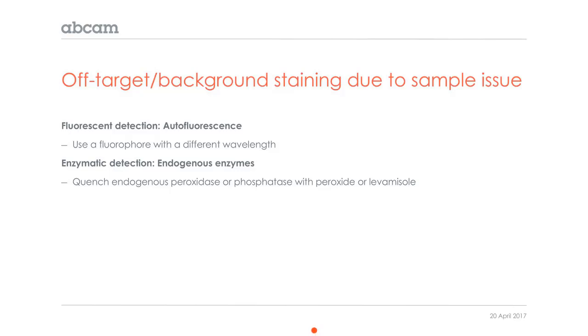Or just look at the tissue without any staining and see which channel — red versus green versus far red — gives you the least autofluorescence.